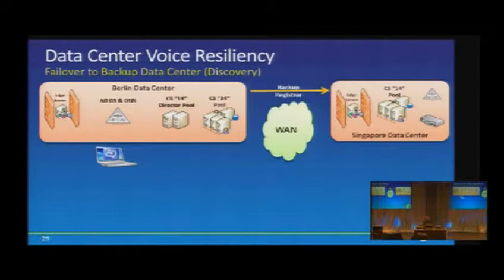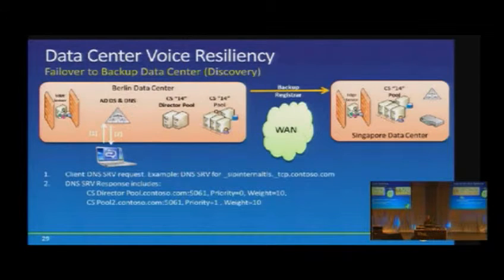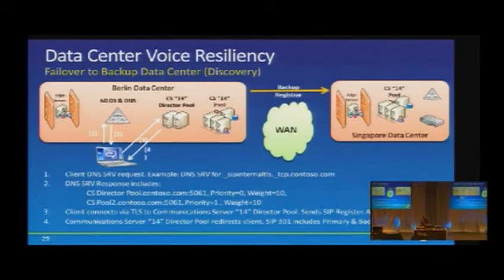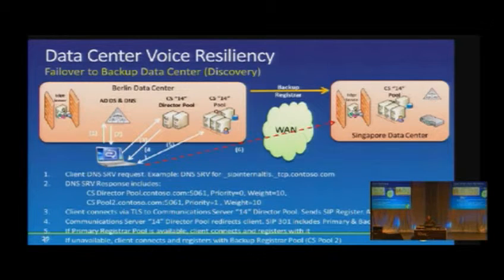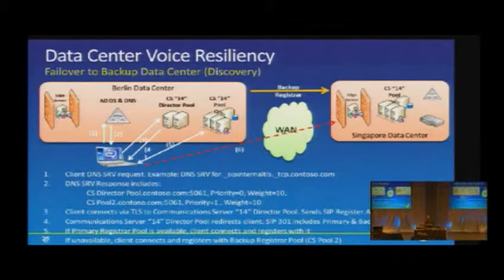For voice resiliency discovery, the client issues a DNS SRV request. That SRV response includes both the director pool and the primary associated pool. The client uses TLS to communicate with the CS14 director pool, registers and authenticates, and the director redirects to the primary associated pool. If the primary is available, registration succeeds; if not, registration falls back to the backup pool.